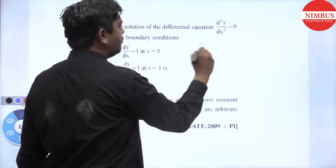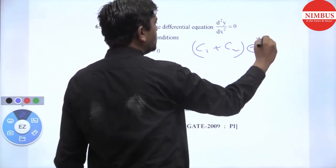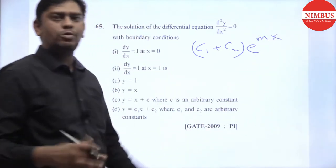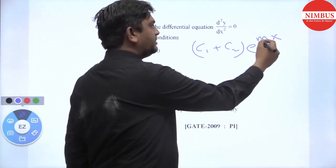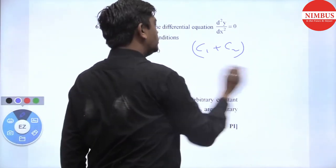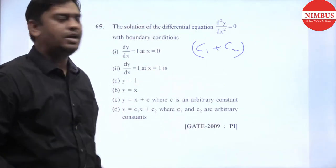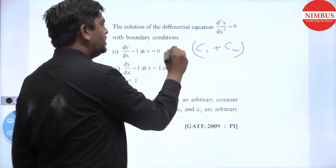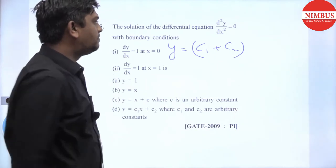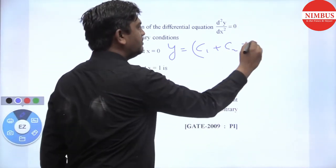So the CF is c₁ + c₂·e^(mx), where m is the root. So CF is c₁ + c₂·e^(mx). And the PI is 0, so CF plus PI equals y. So the y value is c₁ + c₂x.